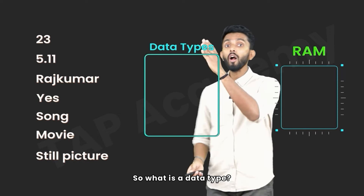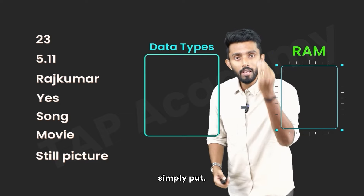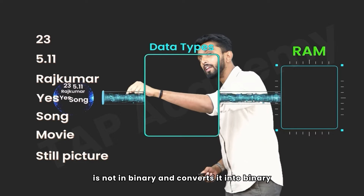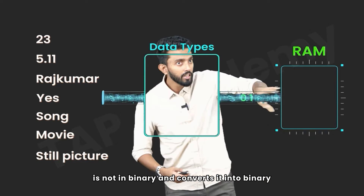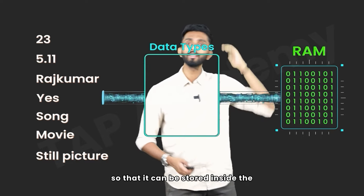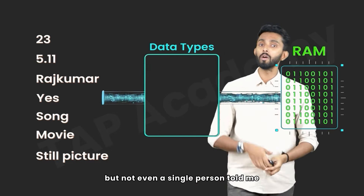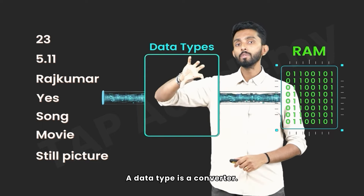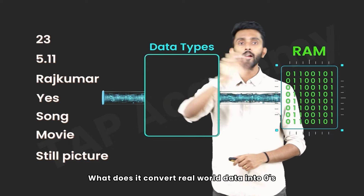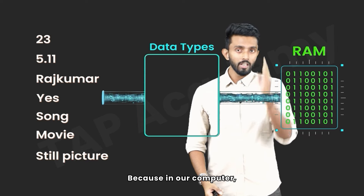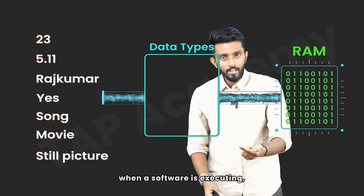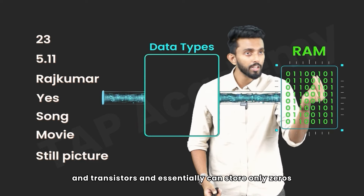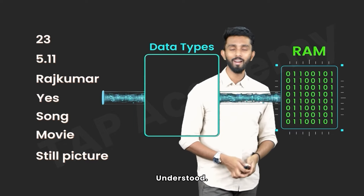So what is a data type? A data type is simply a converter which takes real world data that is not in binary, and converts it into binary so that it can be stored inside the RAM. This was the answer I was expecting. A data type is a converter — it converts real world data into zeros and ones. Why? Because in our computer, when a software is executing it is present inside the RAM, which is made out of bytes, bits, and transistors, and can essentially store only zeros and ones. That is why conversion is required.